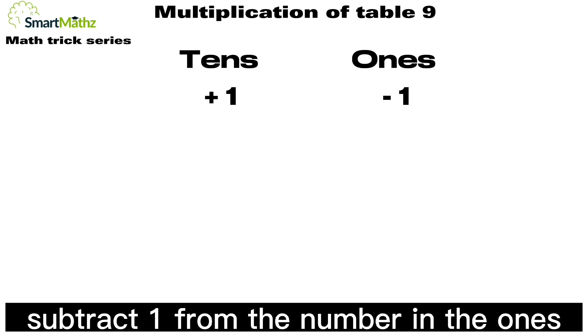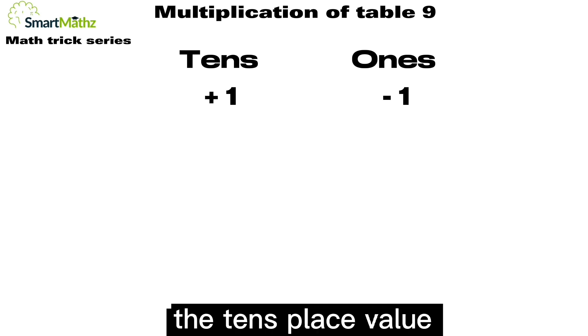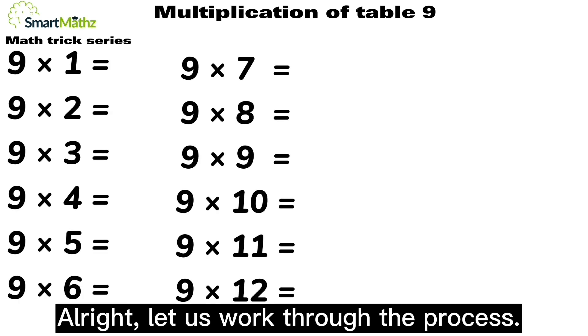The rule of the trick is: subtract 1 from the number in the ones place value, and add 1 to the number in the tens place value. Alright, let us work through the process.